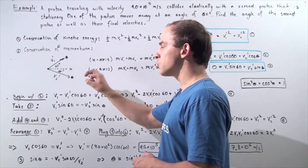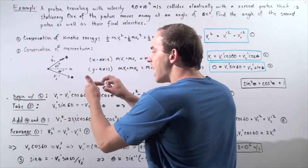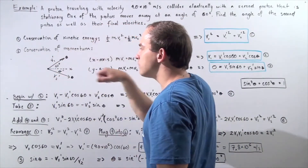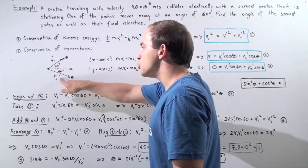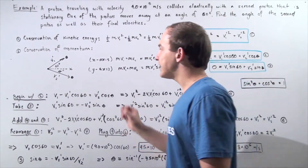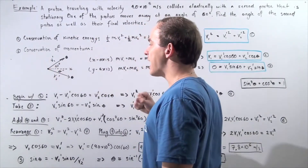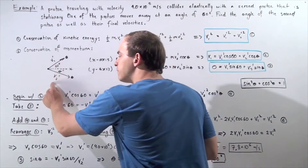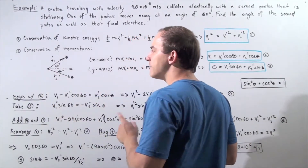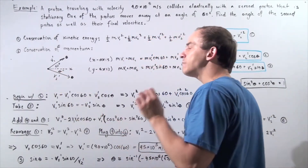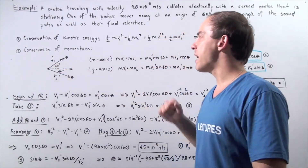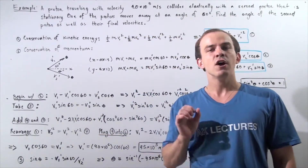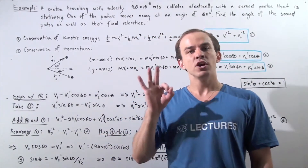Our moving proton collides with the stationary proton and the two protons move away with some unknown velocities, V1 prime and V2 prime. We know the angle that the first proton makes with respect to the x-axis — that angle is 60 degrees. We want to find not only the final velocities V1 prime and V2 prime, but also the angle theta that proton number two makes with respect to the x-axis. We have three unknowns, and that means we need three equations.